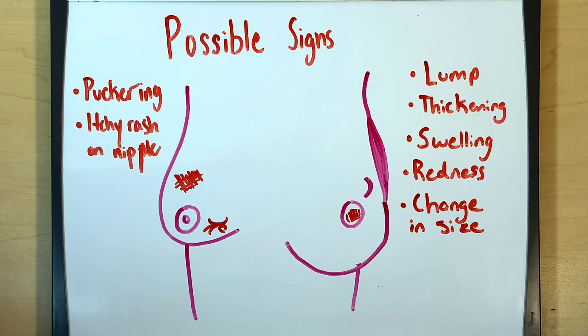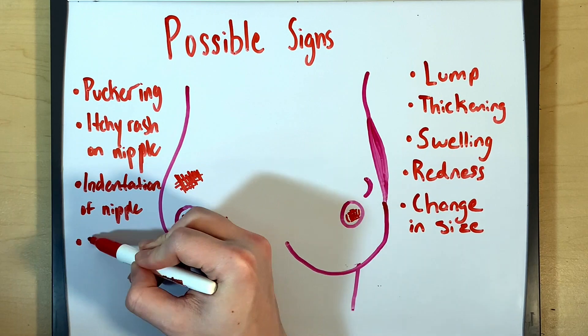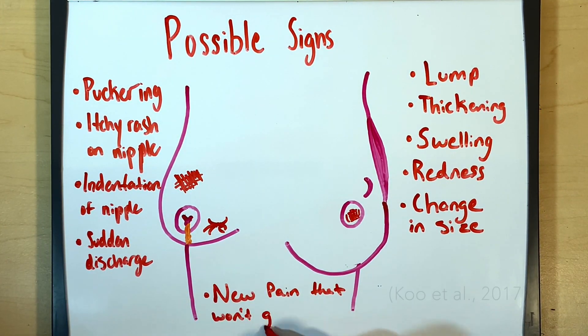Unprovoked itchy scaled rash on the nipple, deformation or pulling of the nipple, sudden discharge, and new pain in one spot that does not go away.